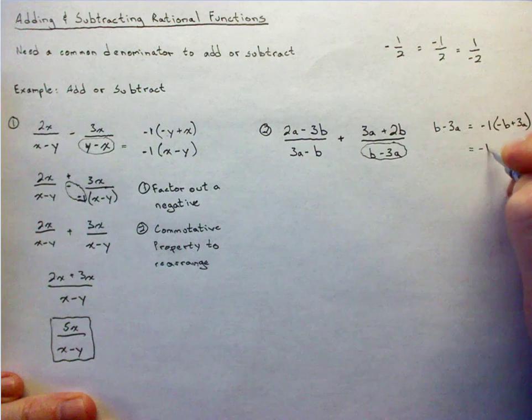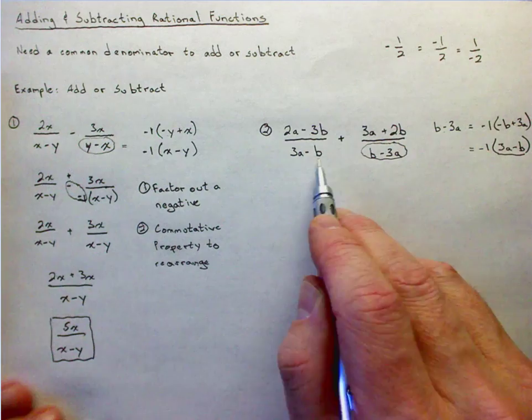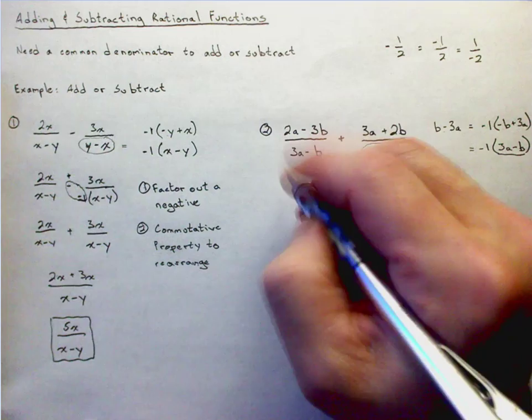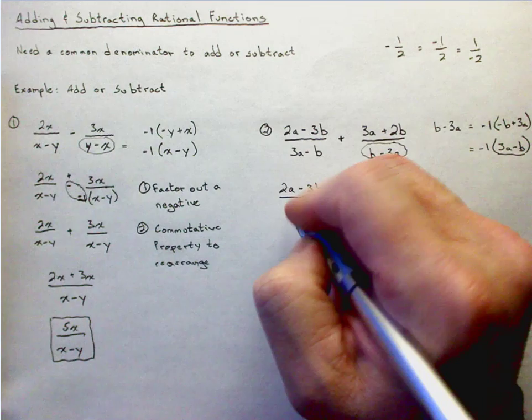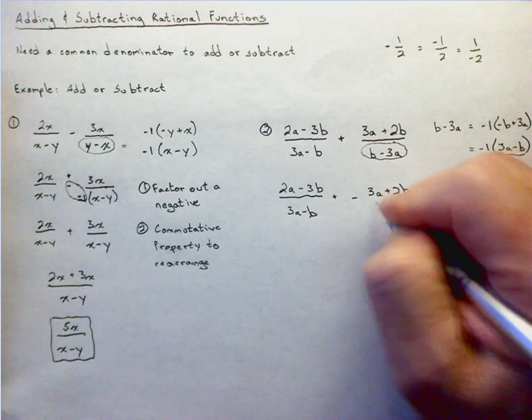And then I can simply rearrange inside of there. And now look, I have 3a minus b, 3a minus b. I have a common denominator. I'm going to take that negative one and move it up there with the plus sign. And now I'll write it a different way to help with the visual understanding. So I have plus a negative 3a plus 2b over 3a minus b.